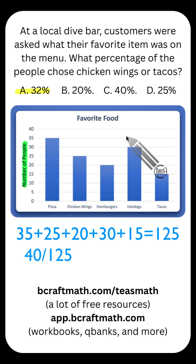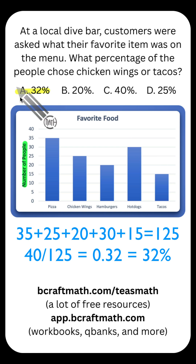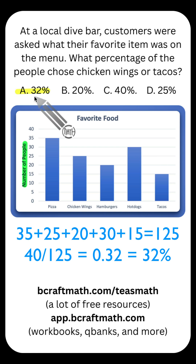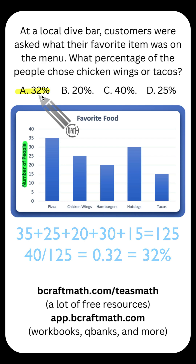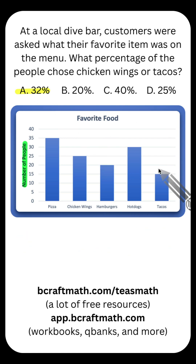That is a fraction. Convert that fraction to a decimal by dividing — that gives you 0.32. Convert that decimal to a percent by either multiplying by 100 or moving your decimal two places to the right. That's how we're getting 32 percent. This means 32 percent of the people surveyed either chose chicken wings or tacos.